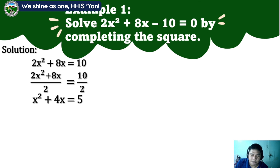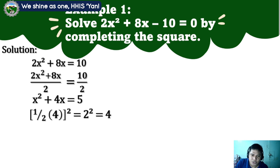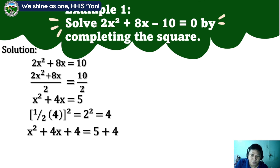Step 3: since b is 4, we take one half of 4, which is 2. Then we square it: 2 squared equals 4. So we have to make it a perfect square trinomial. We add 4 to both sides: x squared plus 4x plus 4 equals 5 plus 4.